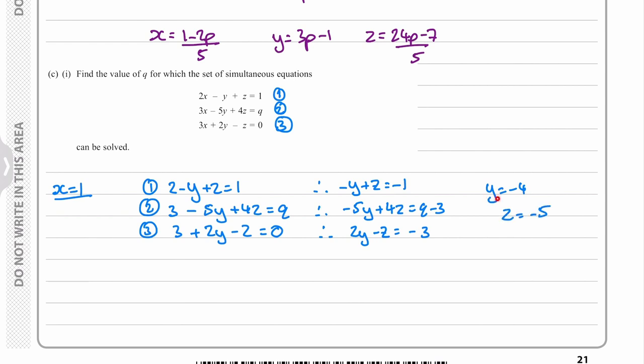So then we can substitute y and z into equation two and this will give us a value of q. So we get 20 minus 20 will equal q minus three, so therefore q is equal to three.